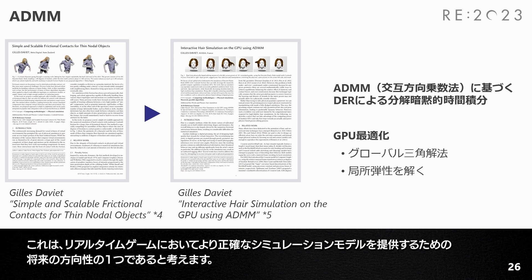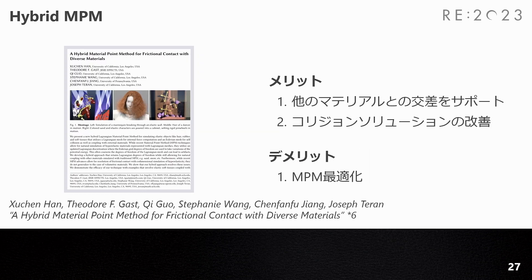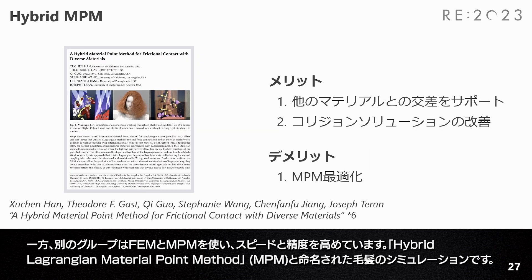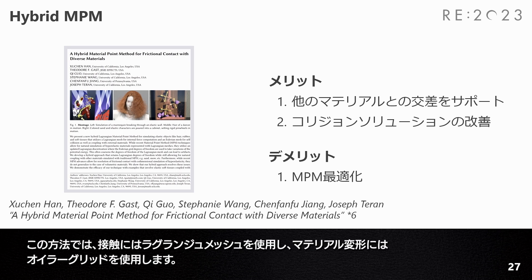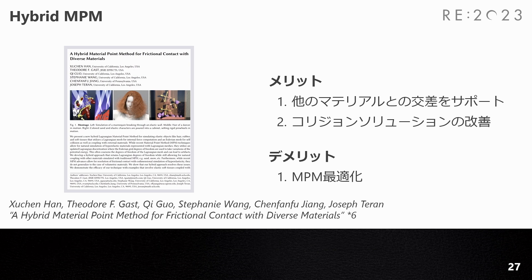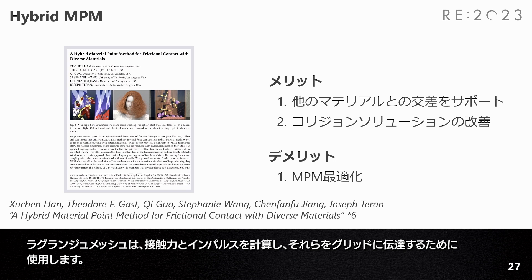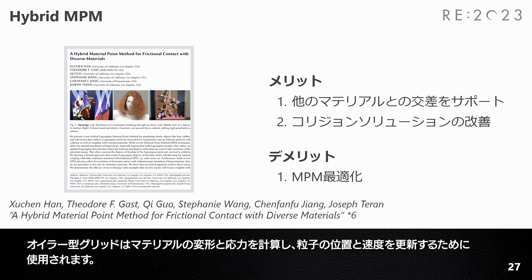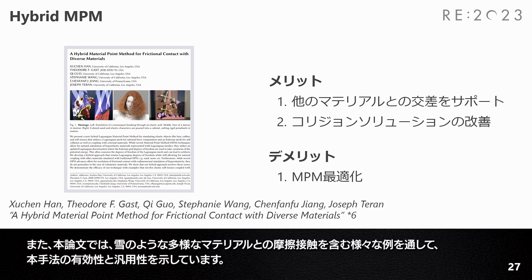This is one future direction for providing a more accurate simulation model in real-time games. On the other hand, another group uses FEM and MPM to accelerate the speed and accuracy, named the hybrid Lagrangian material point method for simulating hair. This method utilizes a Lagrangian mesh for contact and an Eulerian grid for material deformation. The Lagrangian mesh is used to compute contact forces and impulses and transfer them to the grid. The Eulerian grid is used to compute material deformation and stress, and to update particle positions and velocities. The paper also demonstrates the effectiveness and versatility of the method through various samples involving frictional contact with diverse materials.